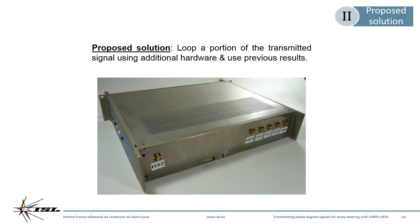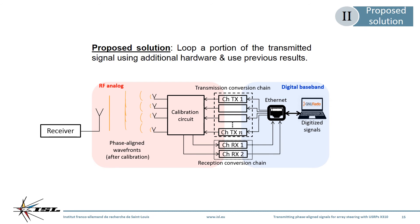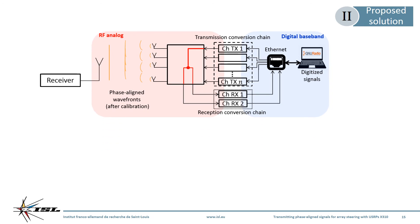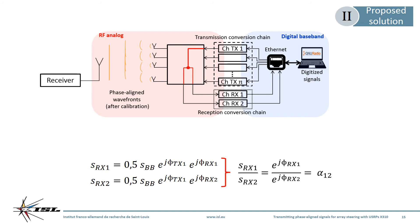Here is a picture of the actual calibration circuit. In practice we have access to four transmitting channels from our two USRPs, and we only use two reception ports to loop our signals. Any number of USRPs can be represented by the transmission conversion chains, but independently of that number, only two conversion chains are used for reception. During the first step, the signal transmitted on the first channel, chosen as a phase reference, is looped back to both receiving channels using a power splitter. This way, the two images only differ by the phase shift induced by the conversion chain in reception.